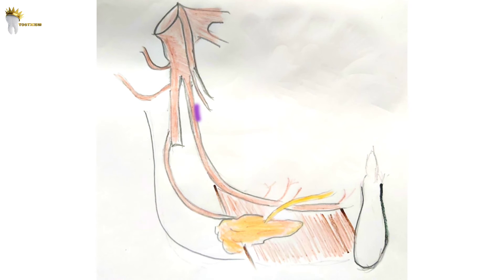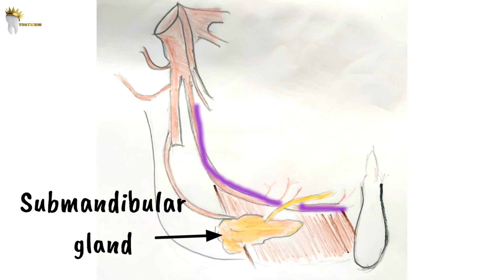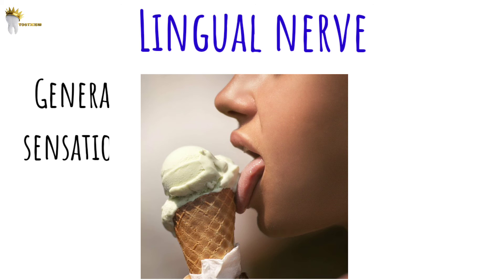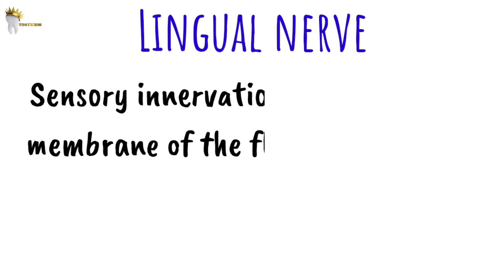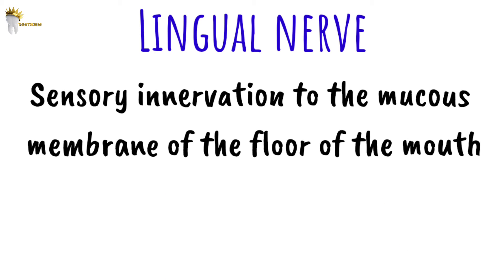The lingual nerve then goes anteriorly across the muscles of the tongue. The submandibular gland and its duct are visible here, and the lingual nerve passes medial to this duct. In the end it breaks up into multiple terminal branches. The lingual nerve provides general sensation and taste sensation to the anterior two-thirds of the tongue, though the fibers for taste are from the chorda tympani, which is a branch of the facial nerve.